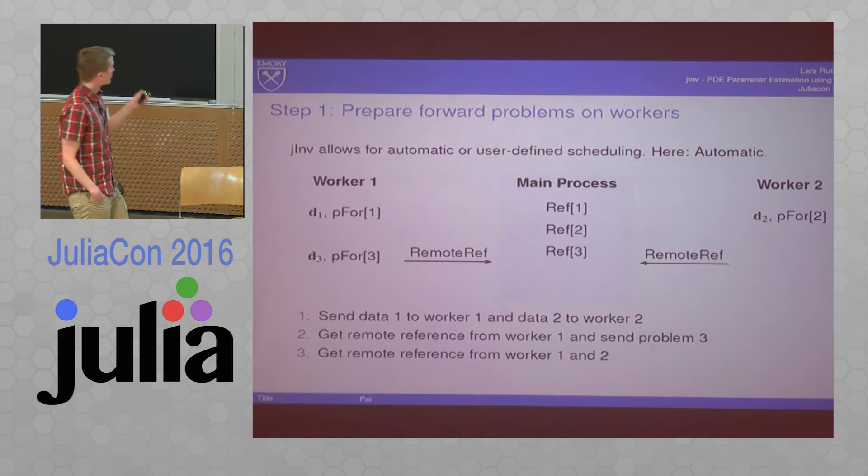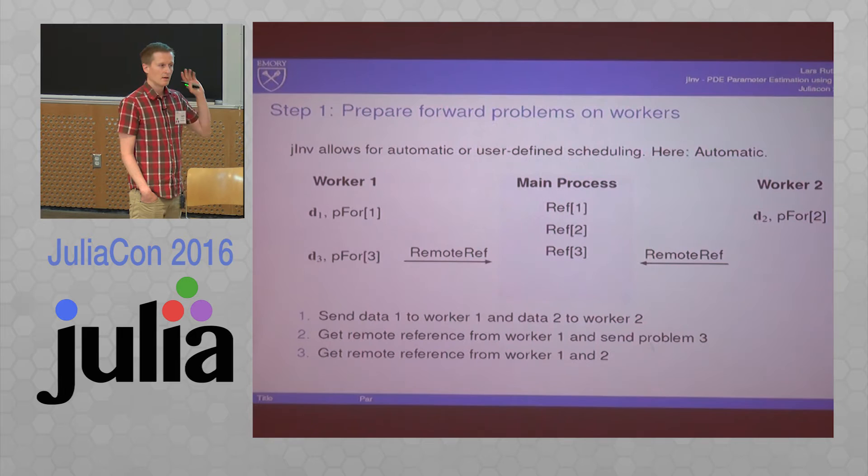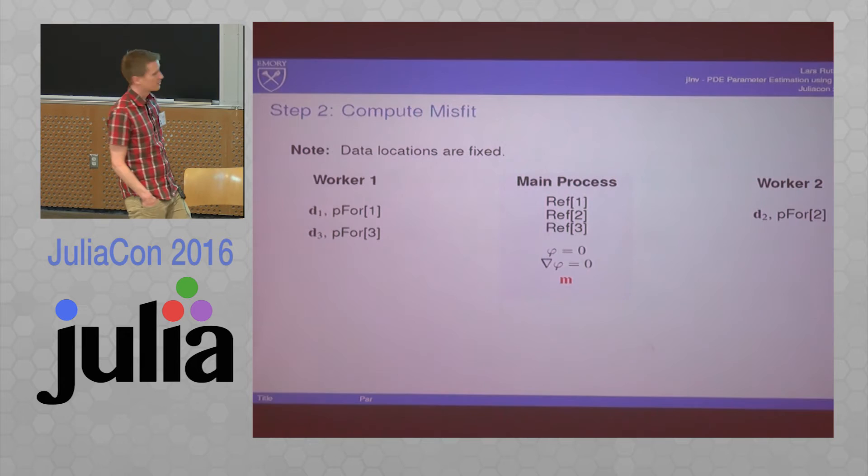So now you have this set up. The main process forgets about everything. It just holds the remote refs. The workers keep everything that is memory intensive. From now on, that's going to be a fixed assignment. So what do we do if we want to compute the misfit?